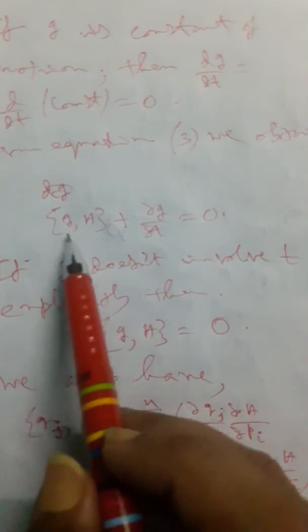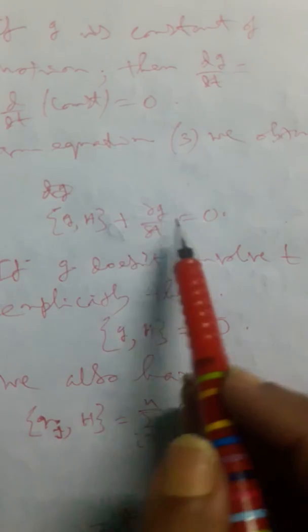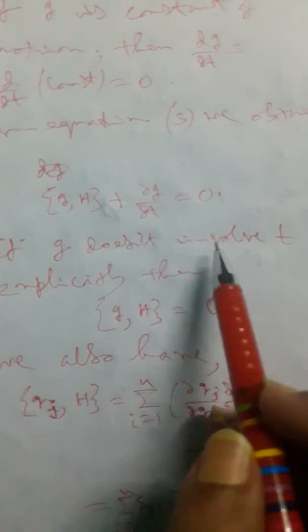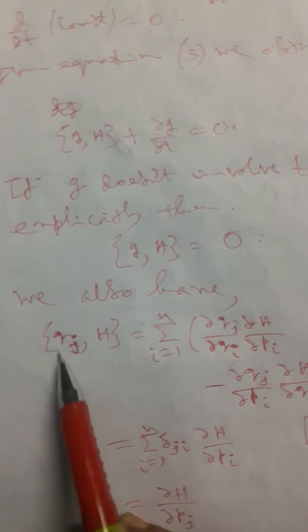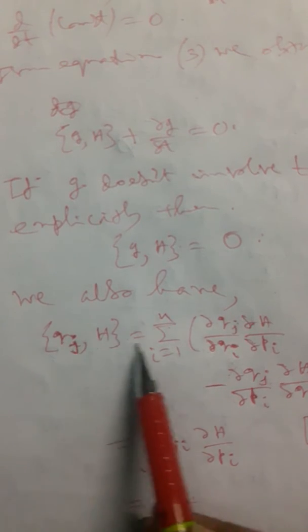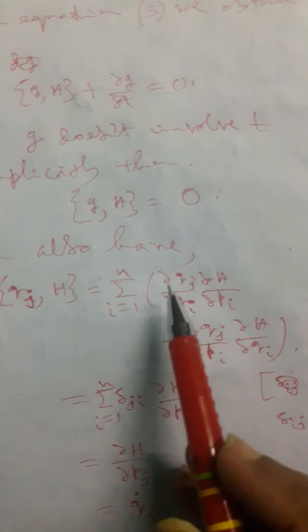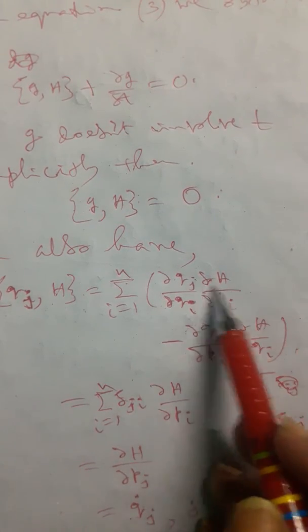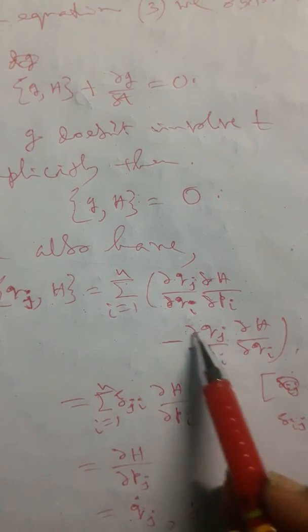If g is a constant of motion, then dg/dt equals zero. From equation three we obtain: {g, H} plus ∂g/∂t equals zero. If g does not involve time t explicitly, then ∂g/∂t is zero, so {g, H} equals zero. We also evaluate the bracket {qj, H} using: (∂qj/∂qi)(∂H/∂pi) minus (∂qj/∂pi)(∂H/∂qi).